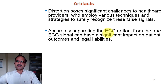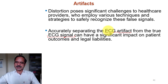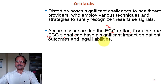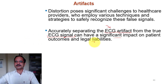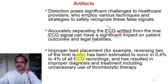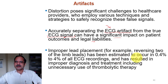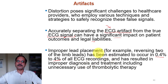Accurately separating the ECG artifacts from the true ECG signals is important because we are interested in the true ECG signals and the noise must be removed. It can have a significant impact on patient outcomes and legal liabilities. Improper lead placement has been estimated to occur around 0.4% to 4% of ECG recordings, resulting in improper diagnosis and treatment, including unnecessary use of thrombolysis.